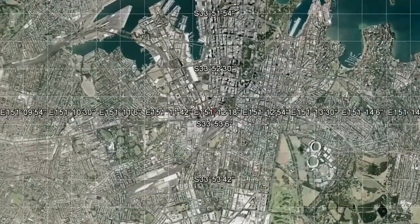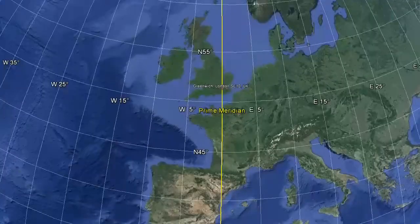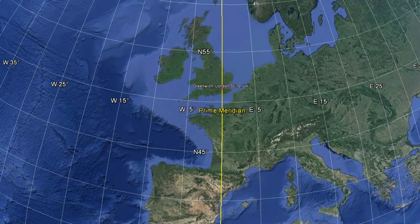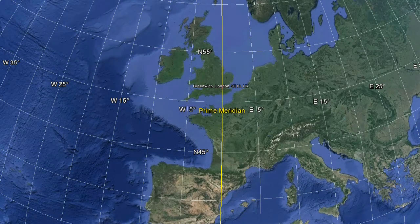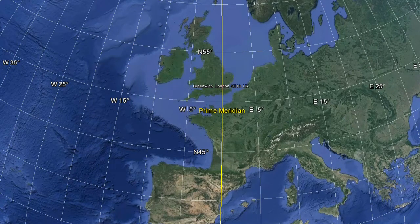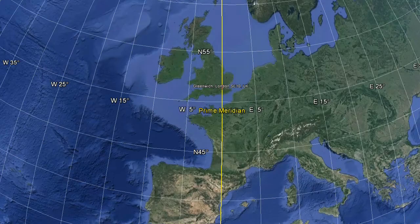Longitude measures how far east and west a place lies on the Earth's surface. But how far east and west of what? The current reference point of longitude is the great circle that runs through the Earth's poles and the Royal Greenwich Observatory in London, UK.